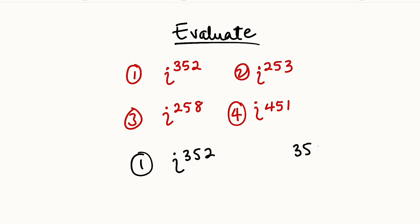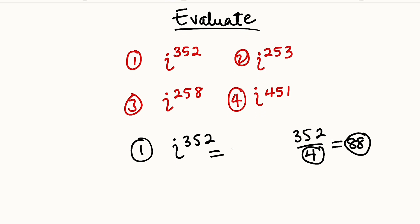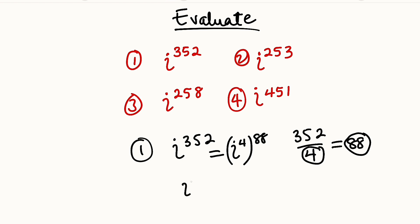352 divided by 4 is equal to 88. This means that if you take 88 multiplied by 4, you are going to get exactly 352. So we can write this as i to the power of 4, raised to the power of 88. By the laws of indices, you can just multiply the powers together to get this back. But we have learned that i to the power of 4 is equal to 1, and 1 to any power is the same thing as 1. Therefore, i to the power of 352 is equal to 1.